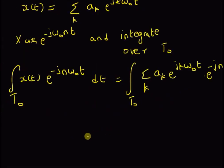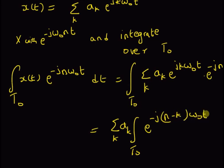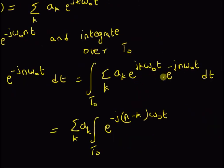So the right hand side becomes: we can rearrange the summation and the integral as summation over k, integral over T₀. Since aₖ is independent of t, it can be written outside. Then we have e^(-j(n-k)ω₀t) — that is, the product of the two exponentials — and then dt.